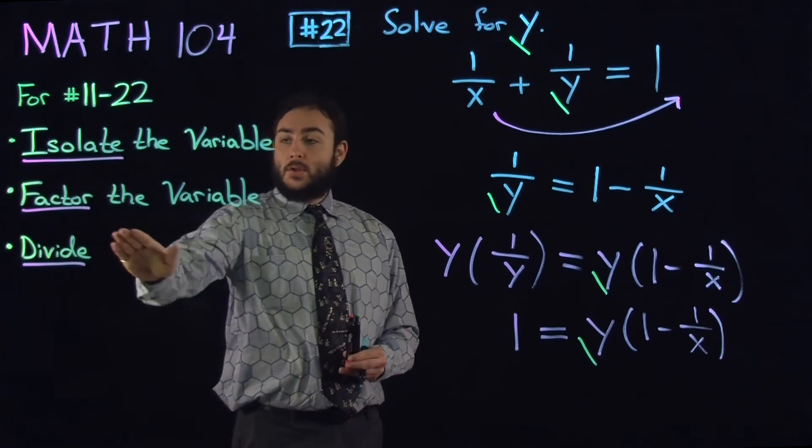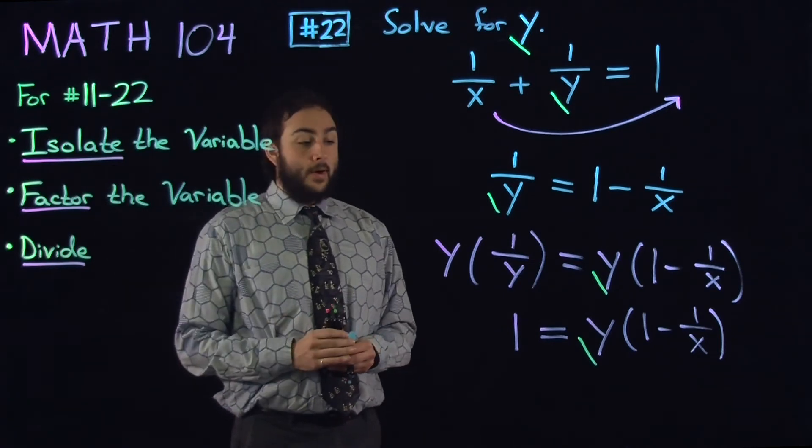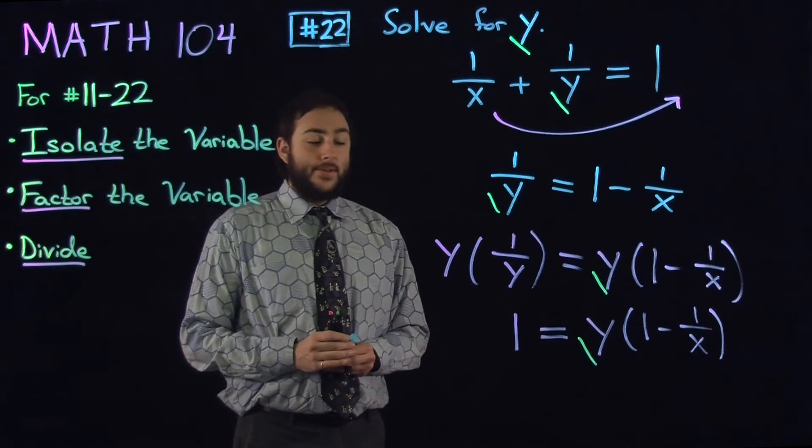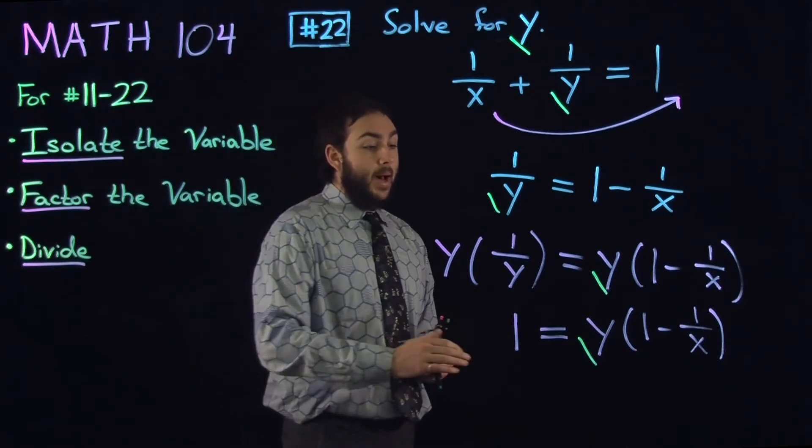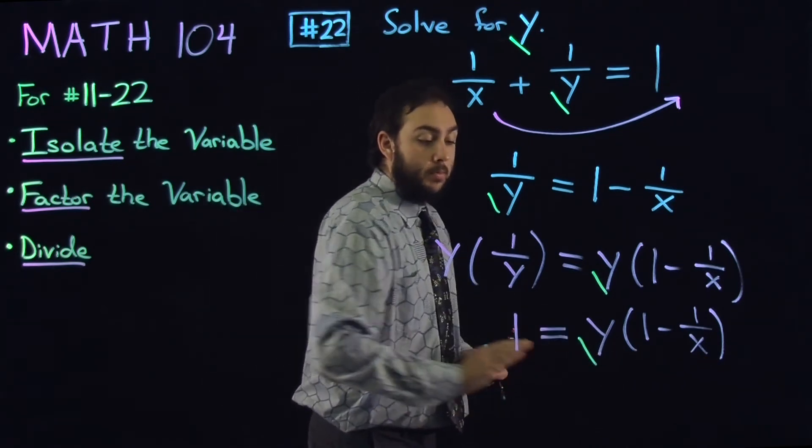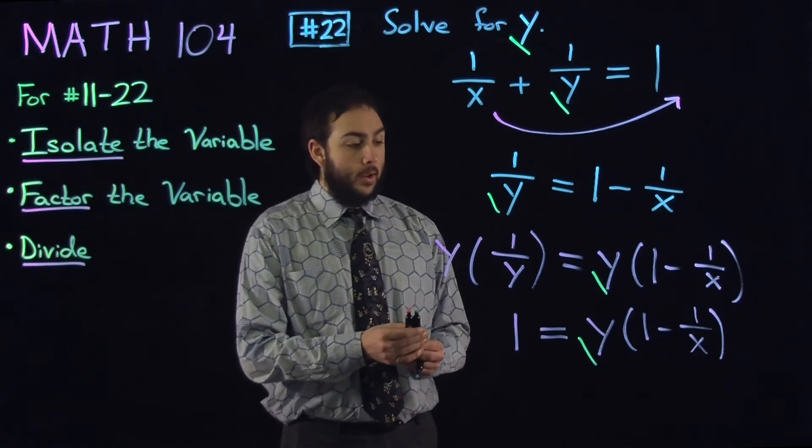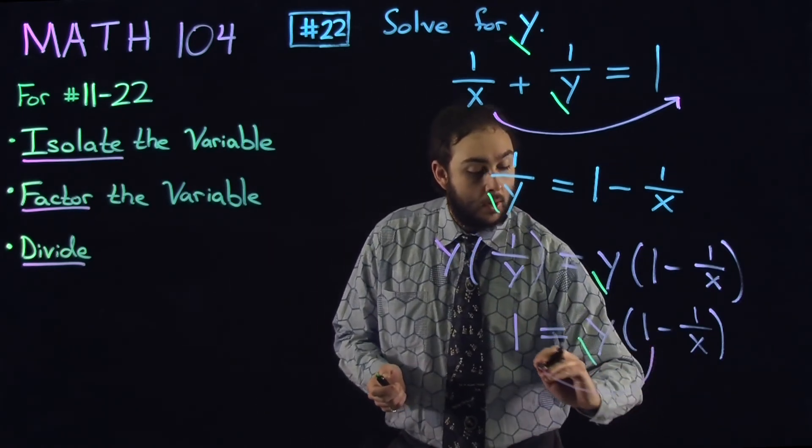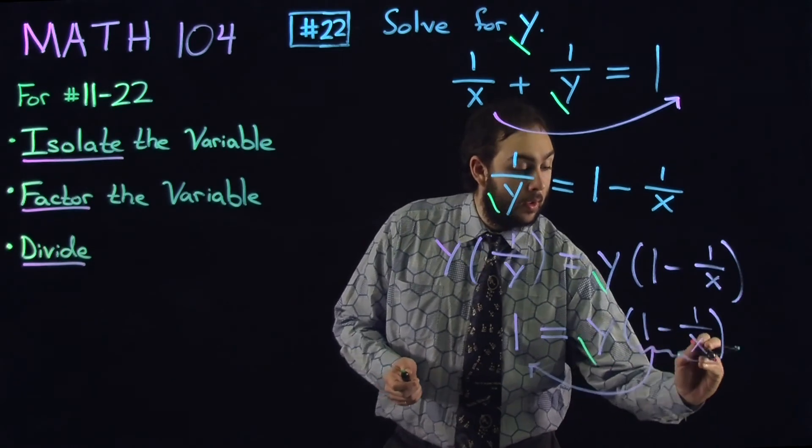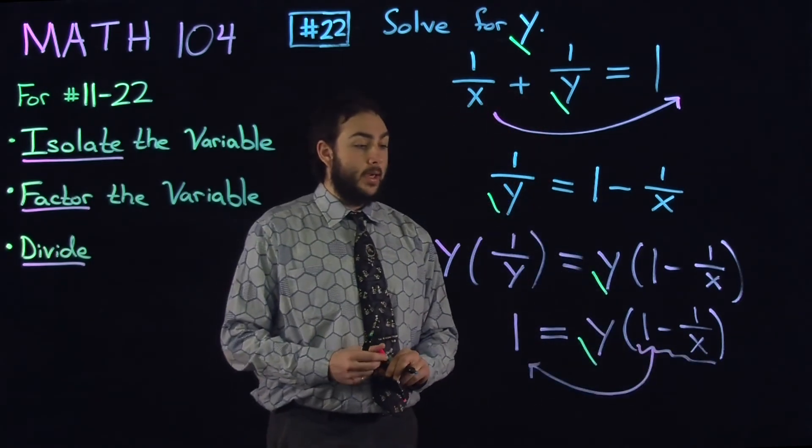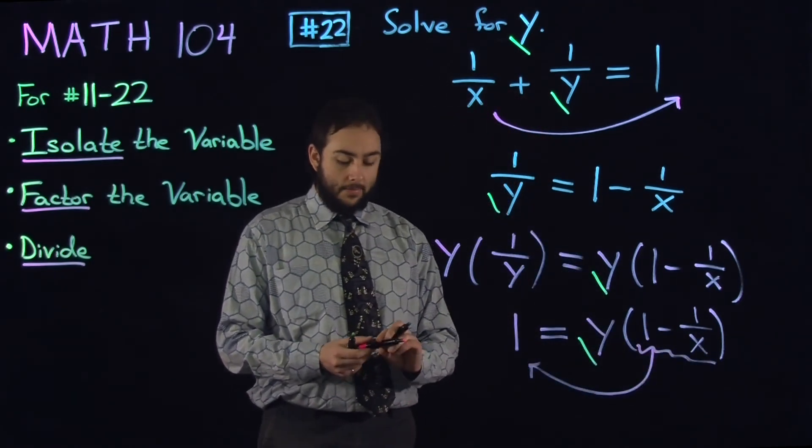Now, since we have factored out the variable that we want, the next step is to divide, namely, by this product term that does not involve y. So we're just going to divide this 1 minus 1 over x term over to the left.